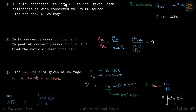The bulb is connected to an AC source and later a DC source, and its brightness is the same, which means power consumed by the bulb is the same. We know power consumed is Vrms squared by R, and for DC it is V squared by R, which means Vrms equals V in DC — that is the definition of Vrms. So Vrms is 12 volts, and since Vrms equals peak voltage divided by root 2, the peak voltage is 12√2.